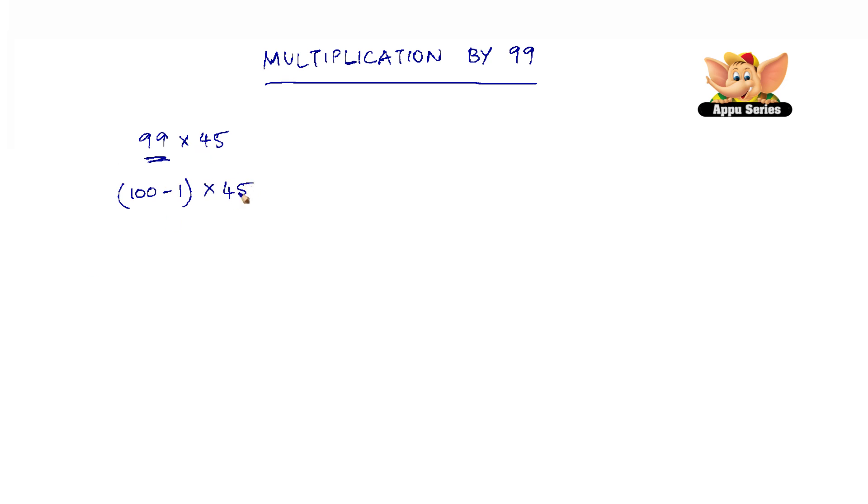So now multiply 100 times 45 and 1 times 45. We have 100 times 45 is 4,500 minus 1 times 45, which is minus 45, giving us 4,455. So this is the answer.